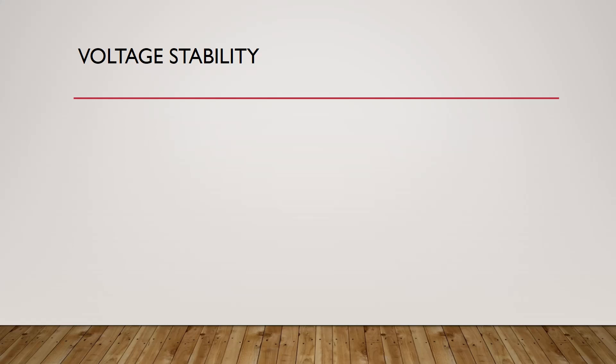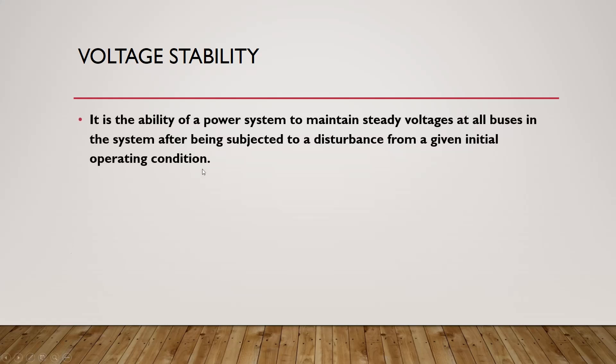Let's discuss voltage stability. Voltage stability is the ability of the power system to maintain a steady voltage at all buses in the system after being subjected to a disturbance from a given initial operating condition. Simply put, it is the ability of the power system to have steady-state voltages at all buses — the same concept as steady-state frequency and steady-state rotor angle — but here applied to voltage after a disturbance.